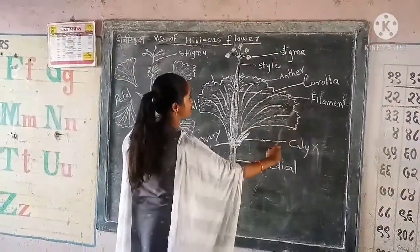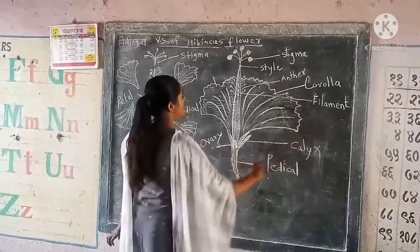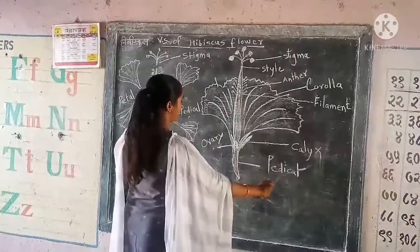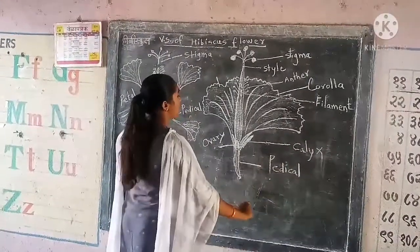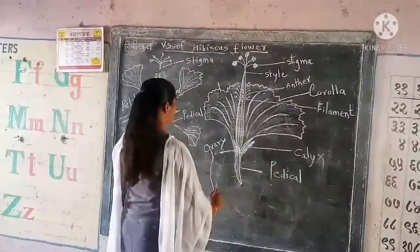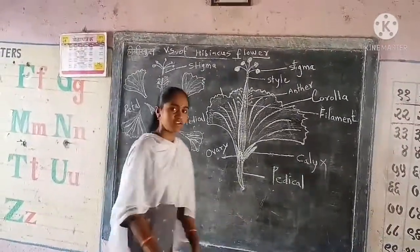This is a corolla. This is a filament. This is a calyx. This is a sepal. This is an ovary.